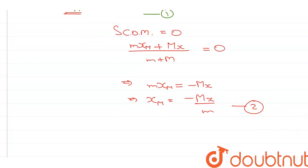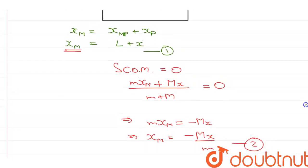So, m times x_m is equal to minus Mx, which means x_m is equal to minus Mx divided by m. Let's mark it as equation number 2.